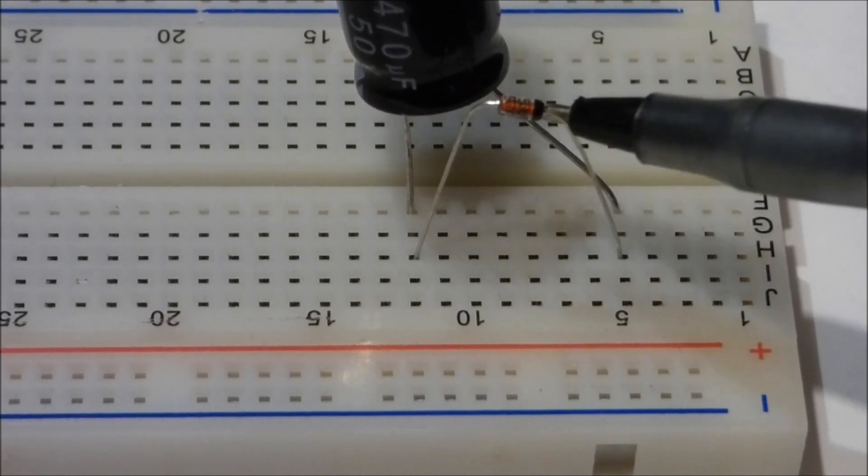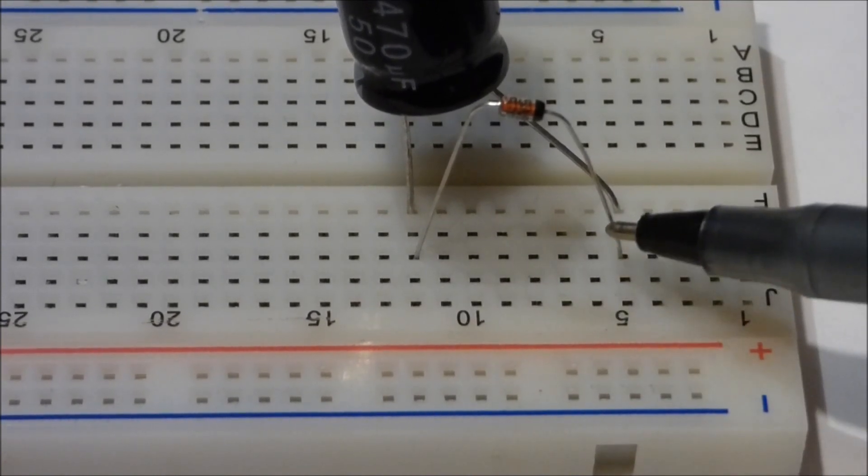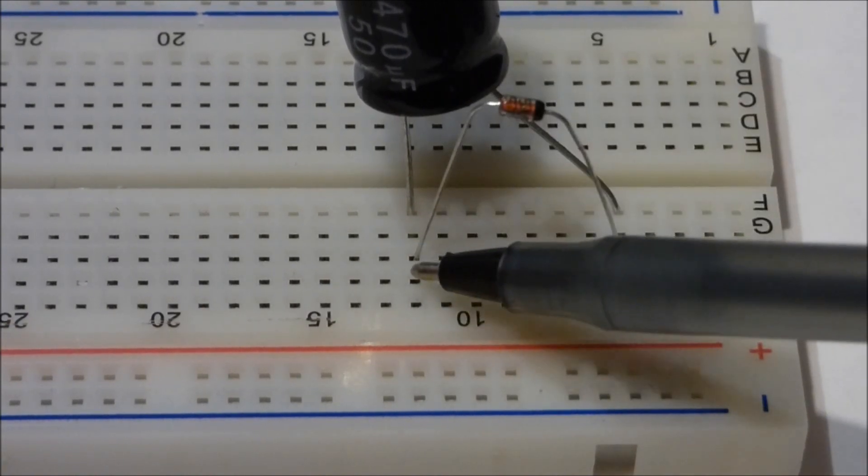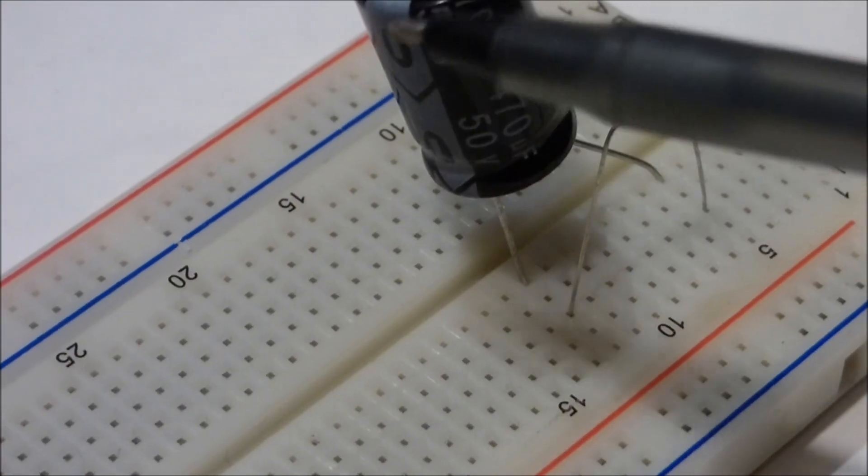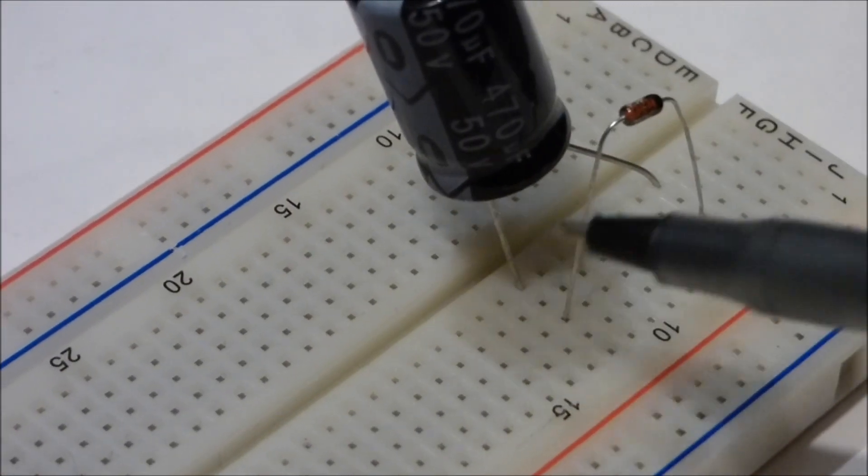Once it reaches a certain voltage it'll go through that diode, and that's the voltage we're looking for. So the negative side of the capacitor here is on the positive side of the diode.